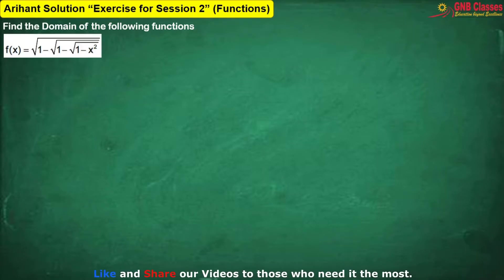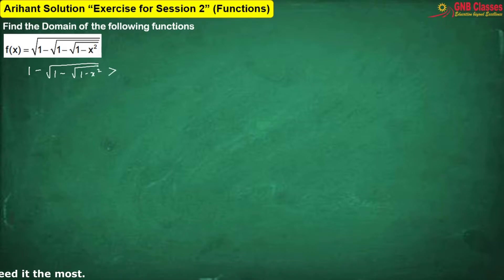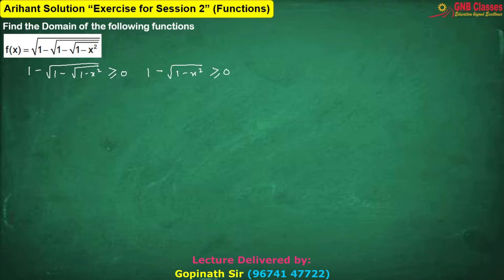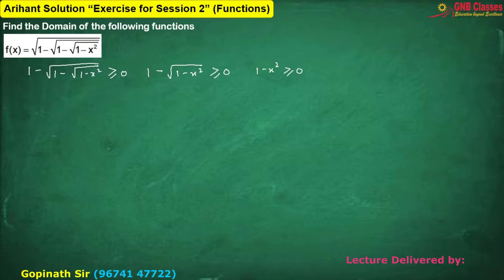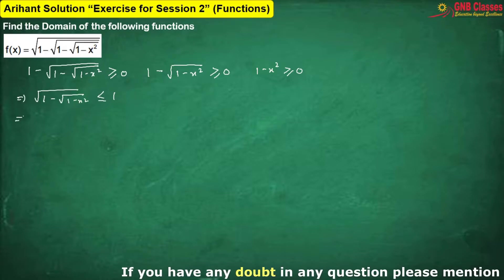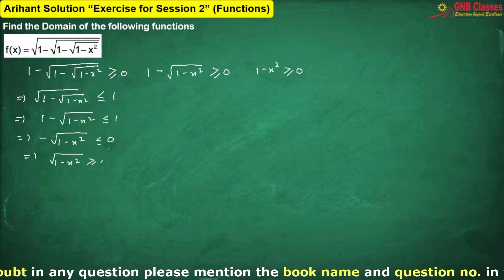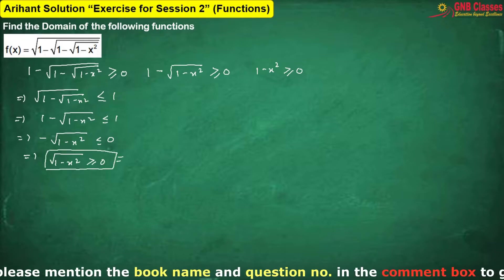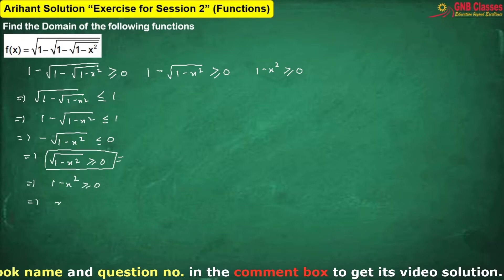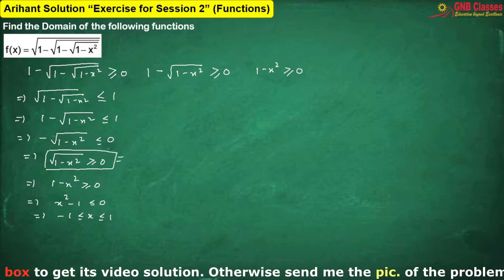For this problem, three cases must be considered to define the function. The first expression must be greater than or equal to zero, then the second must be greater than or equal to zero, and the third must also be greater than or equal to zero. From the first condition, squaring both sides and applying the number line method, we get a result. Now move to the second condition.